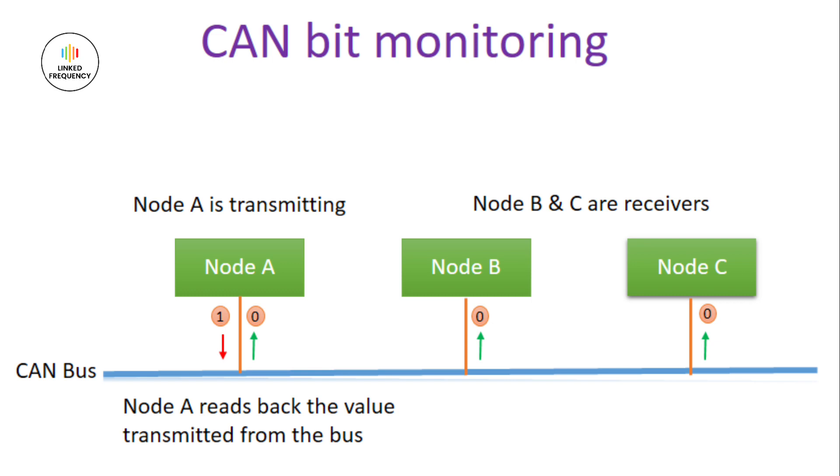However, if the read value is 0 and the transmitted value is 1, then immediately a bit error is indicated and further transmission onto the CAN bus is stopped.